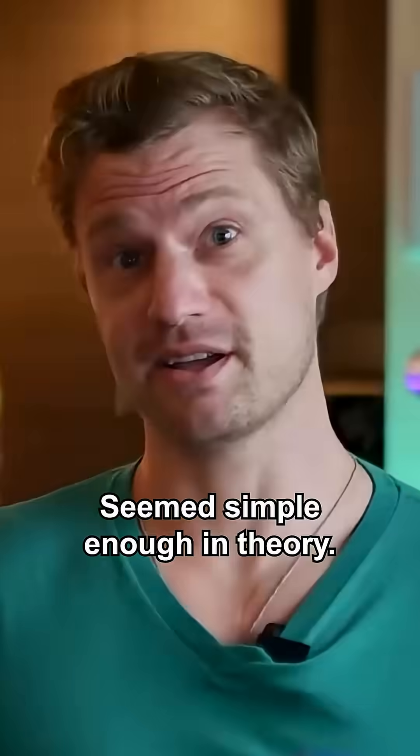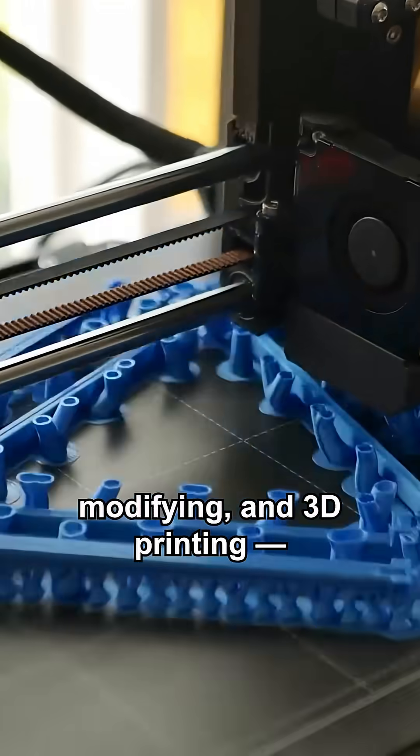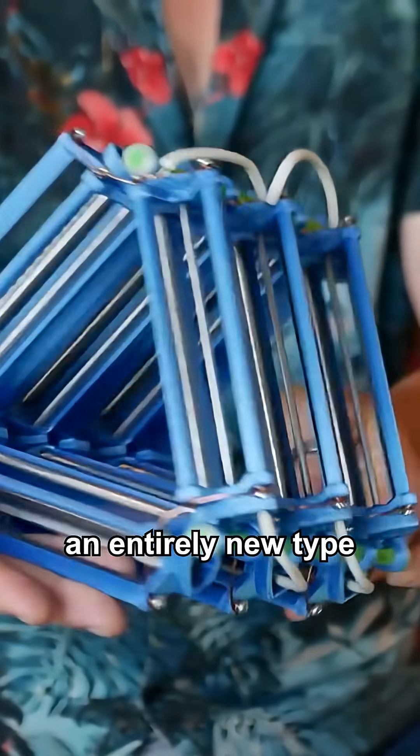Seemed simple enough in theory. After a six week rabbit hole of designing, building, testing, modifying and 3D printing, plus a shocking amount of bean water, I stumbled across an entirely new type of ionic thruster, one which is hollow and relies on peripheral acceleration.